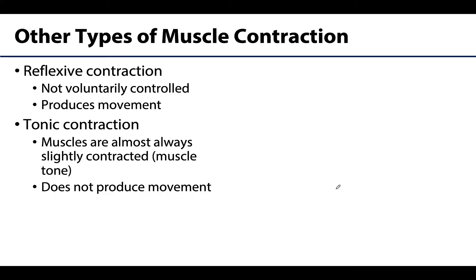As mentioned at the beginning, there are other types of contraction. Reflexive contractions are not voluntarily controlled, which is unique for skeletal muscle. We know from previous videos that skeletal muscle is supposed to be voluntarily controlled, but there are some exceptions where skeletal muscle will have reflexive or more automatic contractions. For example, the diaphragm — our main muscle of inspiration — is a skeletal muscle, and we typically aren't consciously contracting it, so there will be some reflexive contraction associated with the diaphragm.